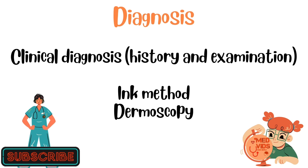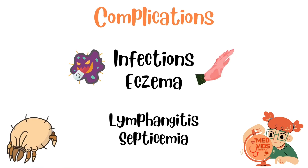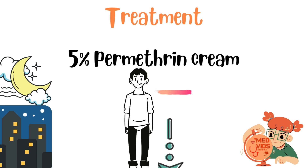Dermoscopy can also be used to visualize these burrows closely. Complications include secondary bacterial infection of burrows and skin lesions, and development of eczema due to repeated irritation at these sites. In the Norwegian type of scabies, lymphangitis and septicemia can occur rarely.